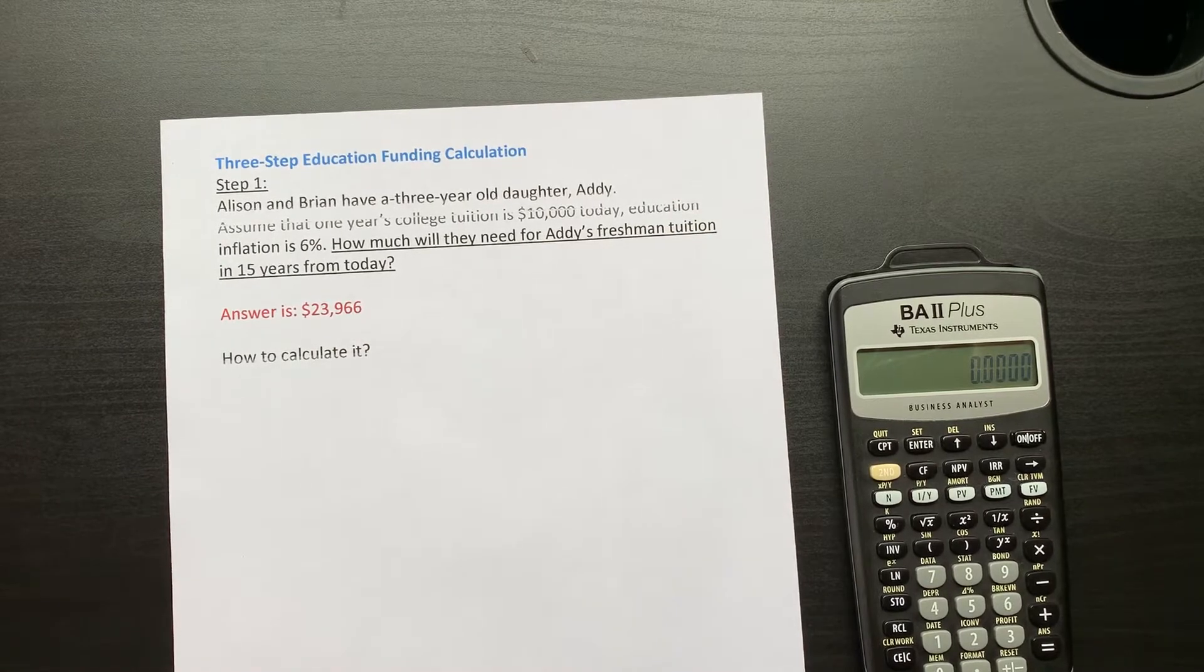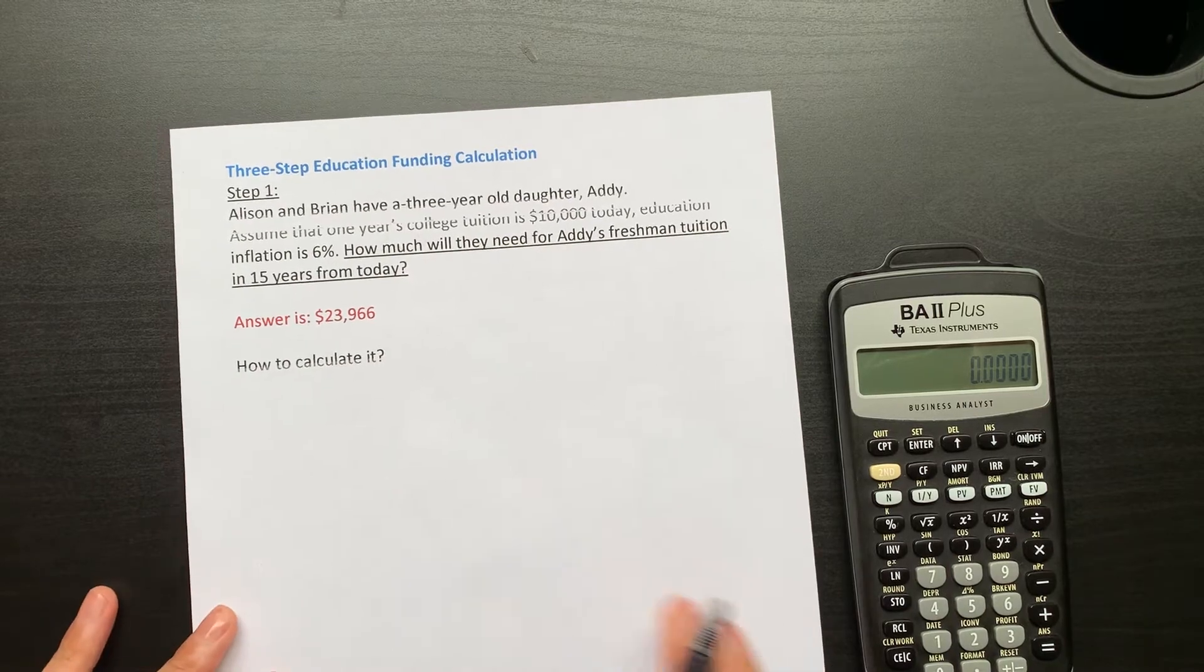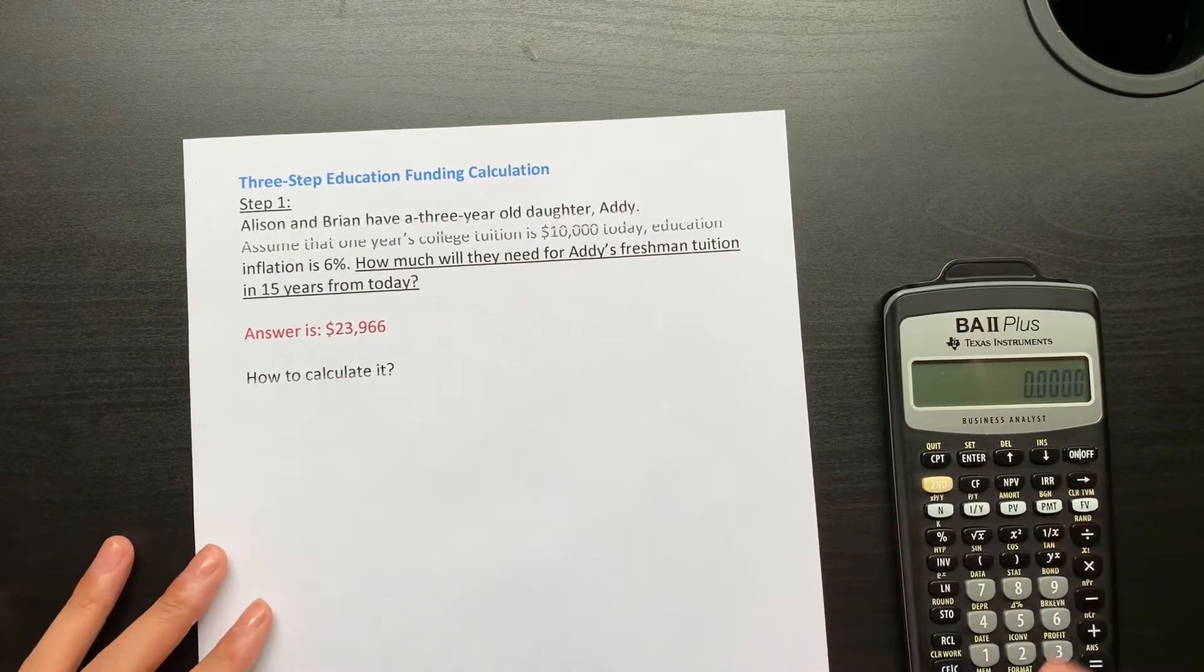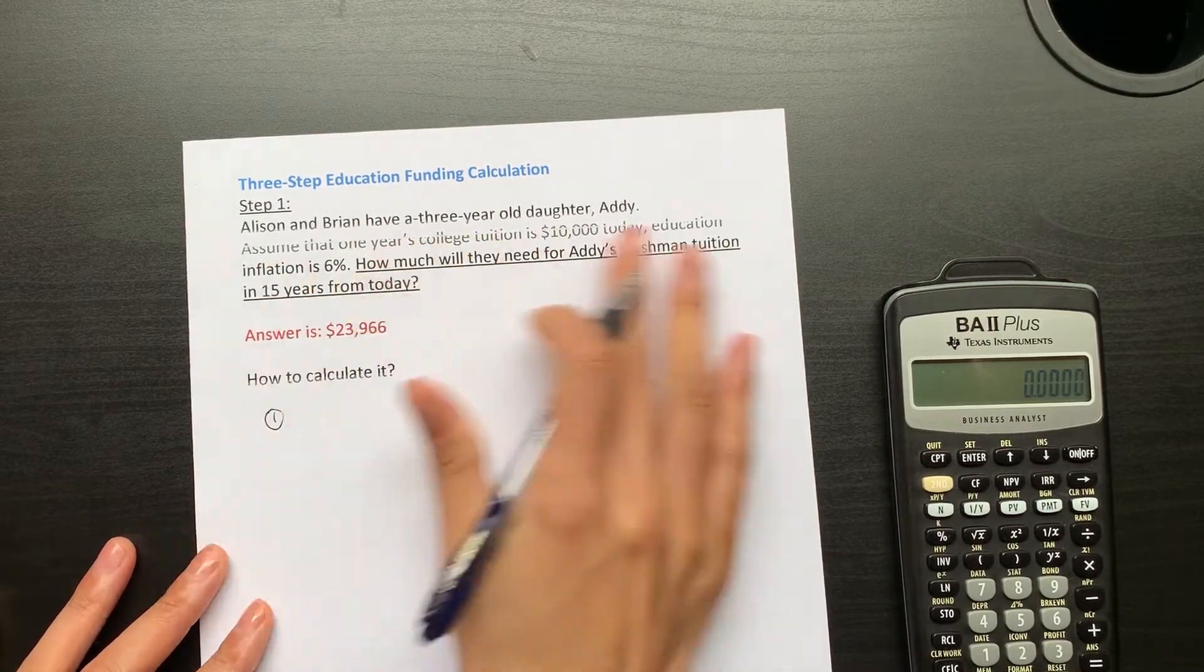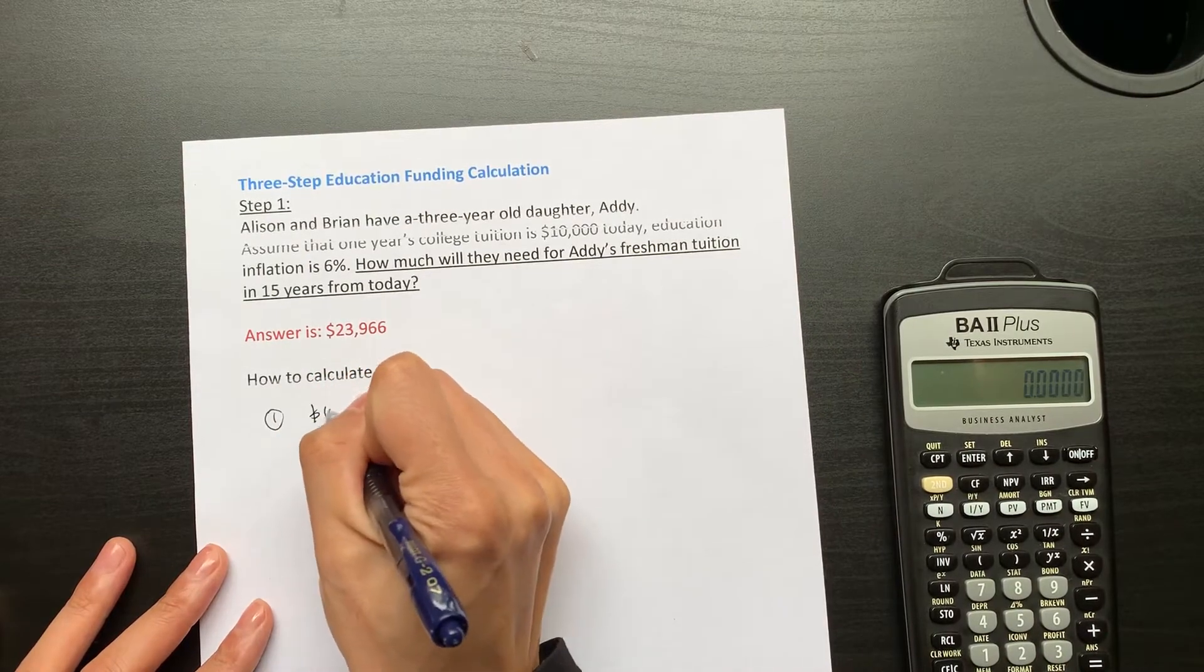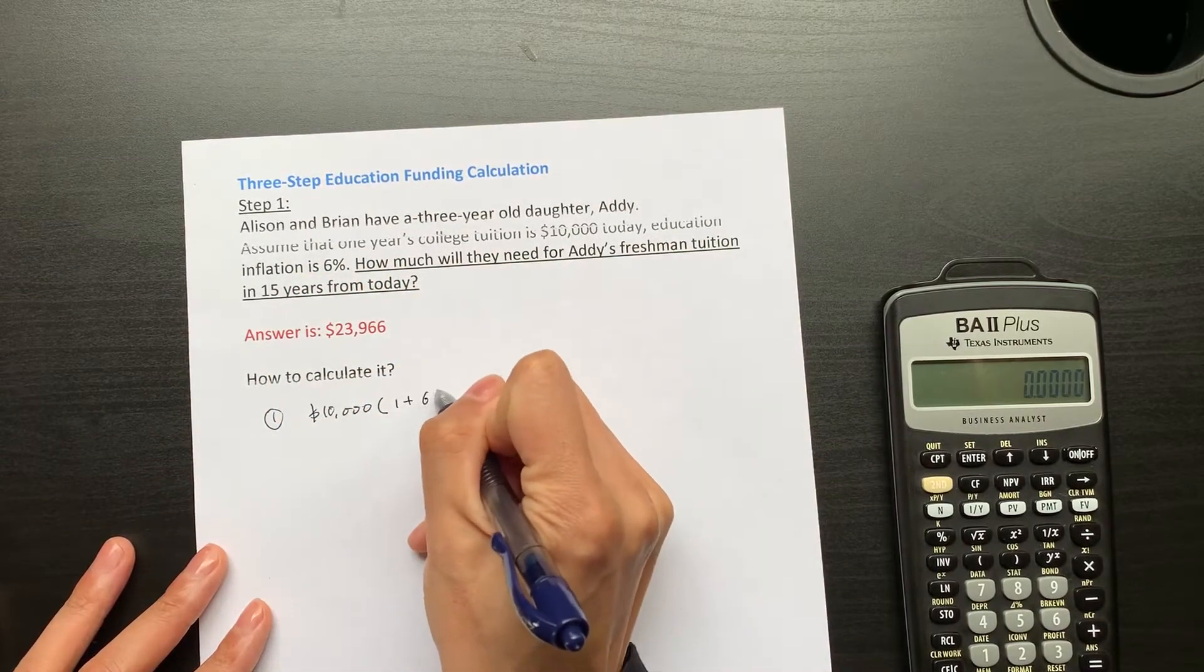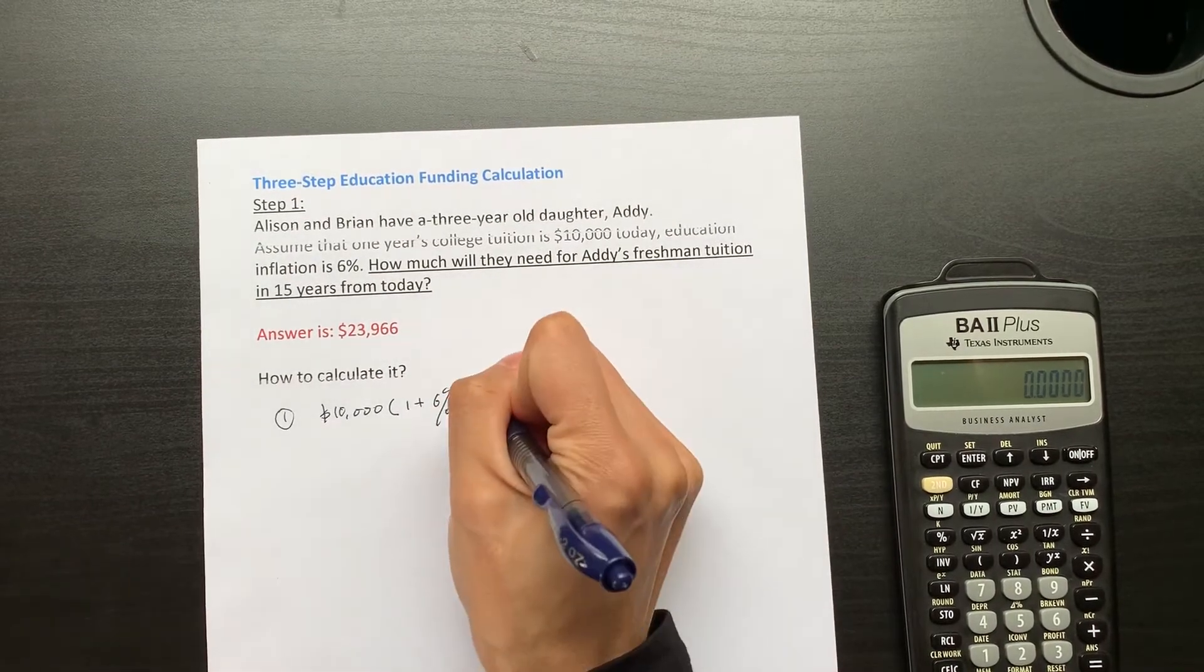So how to calculate this? This is a very simple inflation calculation. There are two ways to calculate it. The first way is simply mathematical. It's $10,000, and you inflate this with 6% inflation per year for 15 years.